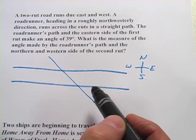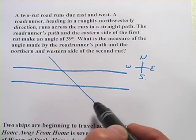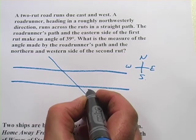So on the eastern side, it says, of the first rut. So if he's coming up this way, the eastern side of the first rut would be right here, so this would be 39 degrees.